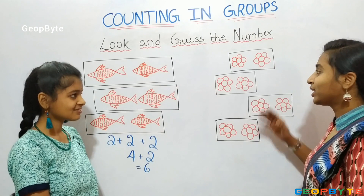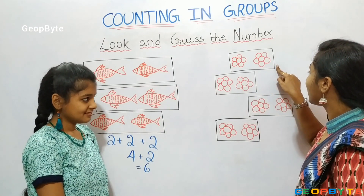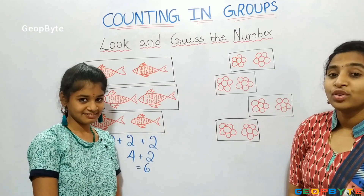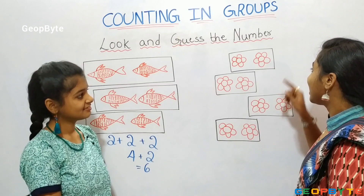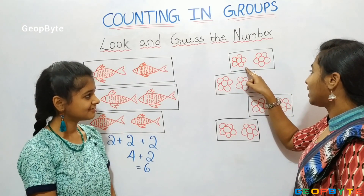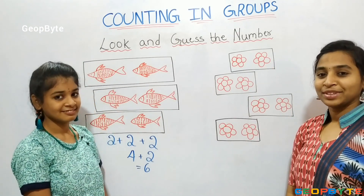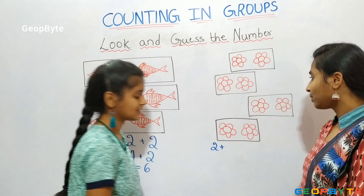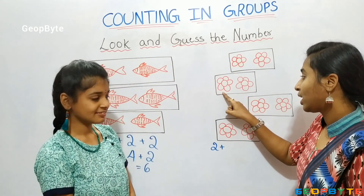Now, let us go with this example. See kids, we have 1, 2, 3, 4 — 4 pairs of flowers. Now, let us count them. First, let us go with this row. We have 1, 2 — 2 flowers in this row. Let us write 2. We have 2 flowers in this row, 1, 2.